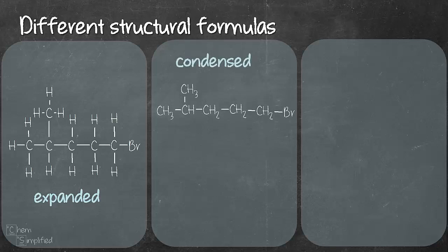Next is condensed structural formula. In condensed structural formula, all of the bonds connecting carbons to hydrogens are not shown. Instead they are condensed into groups of CH3, CH2 and CH.